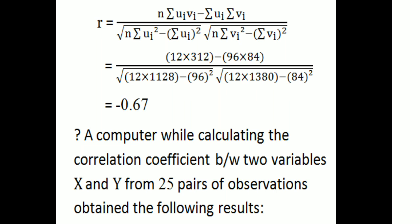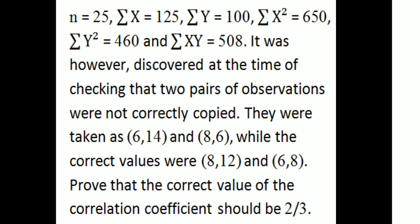Next question: while calculating the correlation coefficient between two variables x and y from 25 pairs of observations, a computer obtained the following results: n equals 25, summation x equals 125, summation y equals 100, summation x-squared equals 650, summation y-squared equals 460, summation xy equals 508. It was discovered that two pairs of observations were incorrectly copied as (6,14) and (8,6), while the correct values were (8,12) and (6,8).